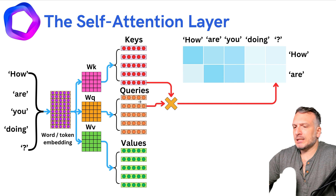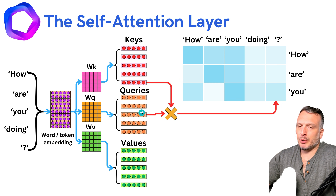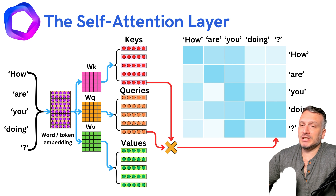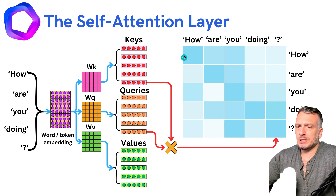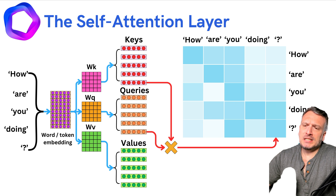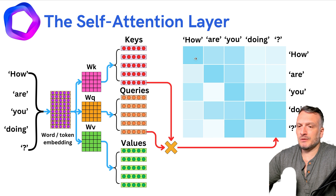We can now iterate on the queries. Looking at the second query, we get an interaction vector between the word 'are' and all other tokens in the input sequence. We repeat this for all queries and all tokens. In the end, we obtain a square matrix of interactions between the different tokens — representing how much each token should pay attention to all others. Nothing is iterative: we have a tensor of keys and a tensor of queries, and we compute this matrix via tensor multiplication, which can easily be parallelized on GPUs.